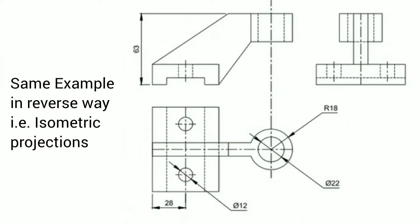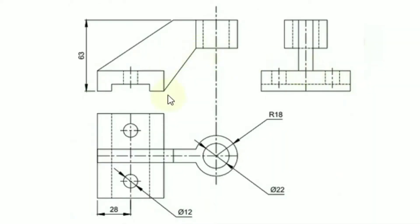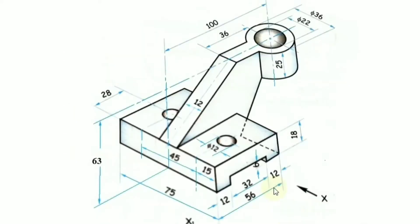Isometric projection is a very important topic in engineering drawing. Whatever we did in orthographic projections, now we will be doing exactly the reverse way. You can see here two or three views of the object given in two-dimensional figures, and by looking at these views we are supposed to draw a pictorial 3D figure of the object.